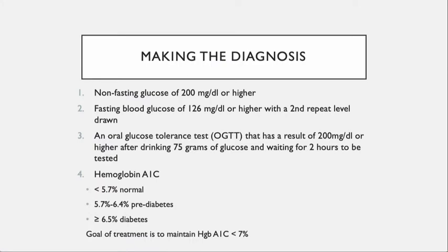How do we diagnose diabetes? These criteria change periodically, but currently: a non-fasting glucose of 200 or higher; a fasting blood sugar of 126 or higher confirmed with a second draw also at 126 or more; an oral glucose tolerance test result of 200 mg/dL or higher after two hours. A hemoglobin A1C is more convenient, and we've now established parameters to use it for diagnosis, not just management.